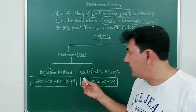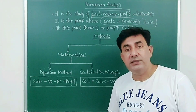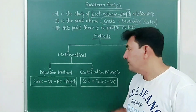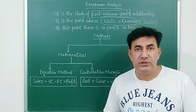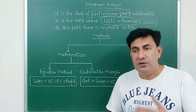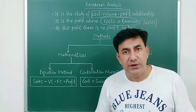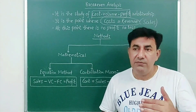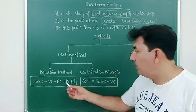We use this equation: Sales minus VC — VC stands for variable cost, the cost in production — minus fixed cost is equal to profit. Sales minus variable cost minus fixed cost gives us profit. If variable cost and fixed cost are greater than sales, that means there is a loss.